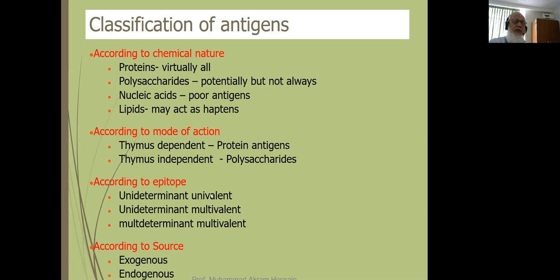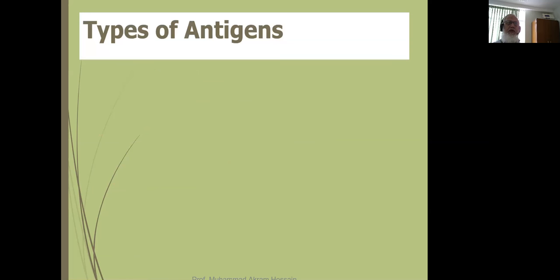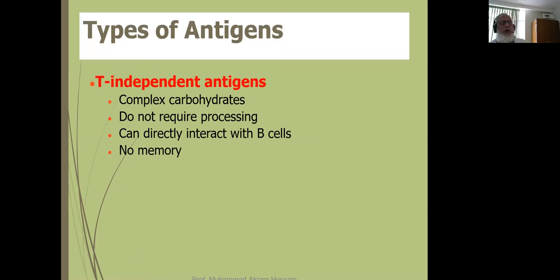These polysaccharide antigens can independently stimulate the B cell to produce antibody, but the response is very short-lived and mostly IgM. According to epitope, antigens may be unideterminate univalent or multideterminate multivalent. According to source, they may be exogenous or endogenous. Exogenous antigens come from outside — bacteria, virus, etc. Endogenous antigens are from within the cell. T-independent antigens are complex carbohydrates that do not require processing by antigen-presenting cells; they can directly interact with B cells.